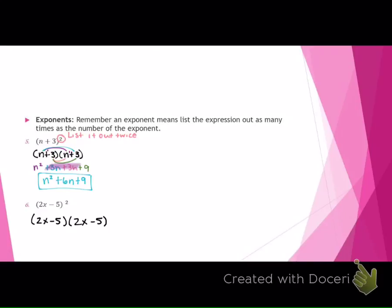Brian, in that problem number 6, what do I need to do first? 2x minus 5 squared. We need to list it out twice. So if I list it out twice, that's 2x minus 5 times 2x minus 5. What do I need to do next? Distribute the 2x to the 2x and the 2x to the negative 5. So you distribute the 2x to the 2x and the 2x to the negative 5 there. What do you get? 4x squared and negative 10x.